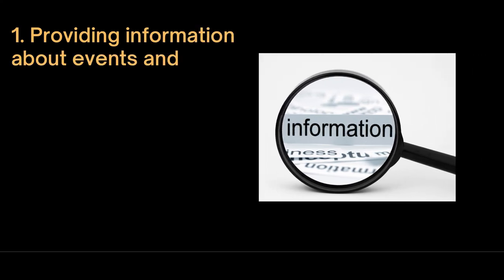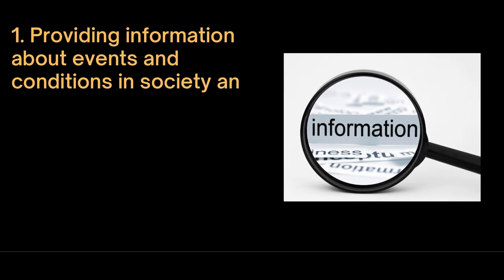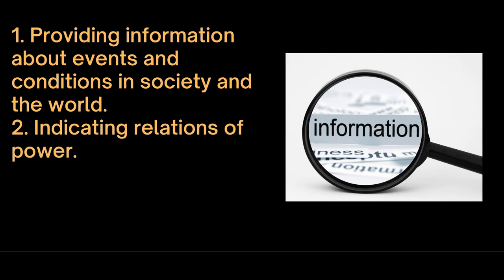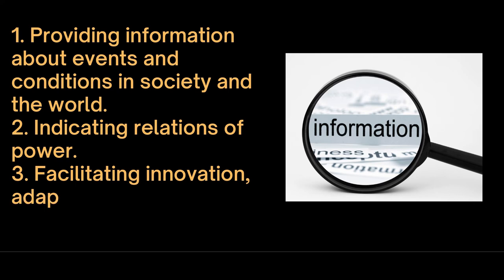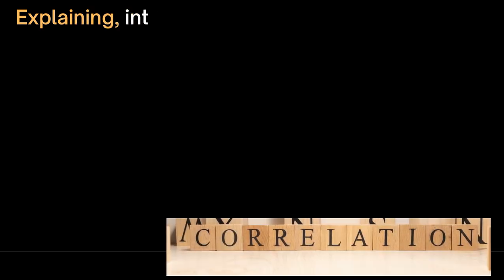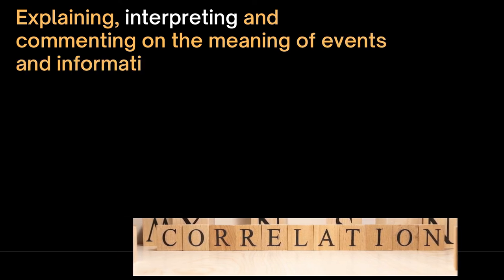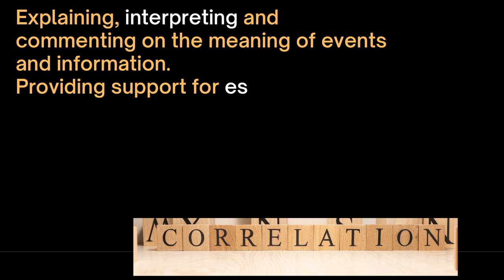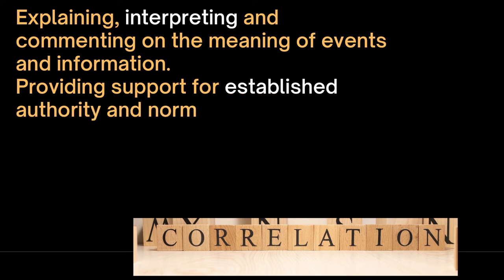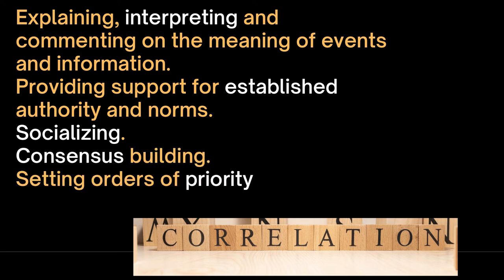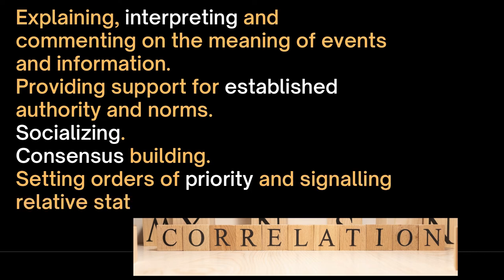The information function provided by mass communication includes: firstly, providing information about events and conditions in society and the world; secondly, indicating relations of power; and thirdly, facilitating innovation, adaptation, and progress. The correlation function is about explaining, interpreting, and commenting on the meaning of events and information. It also provides support for established authority and norms, helps in socializing, and performs consensus building, setting orders of priority, and signaling relative status.